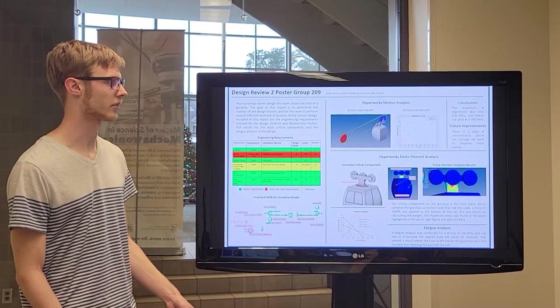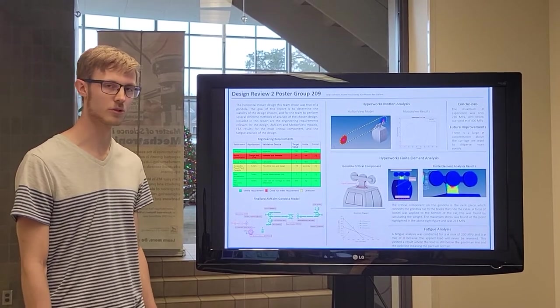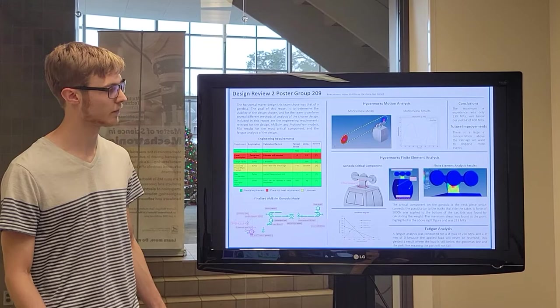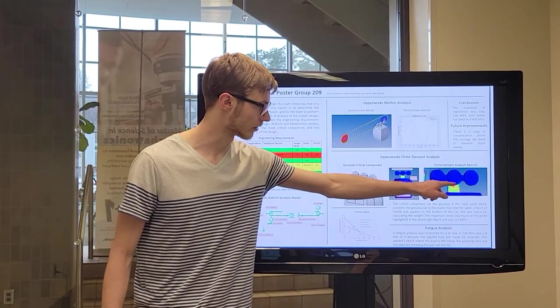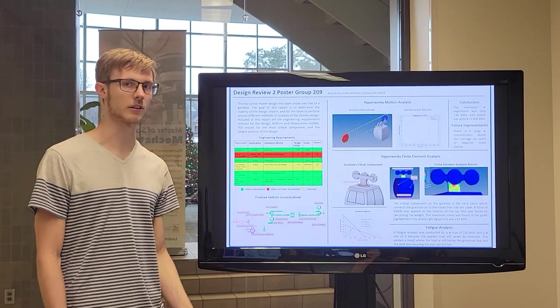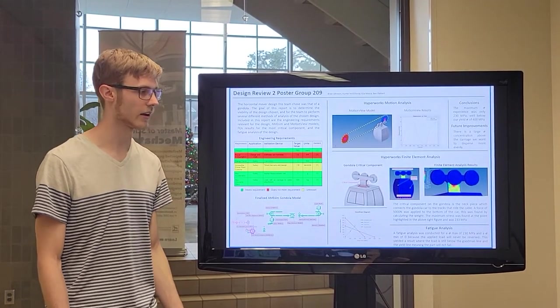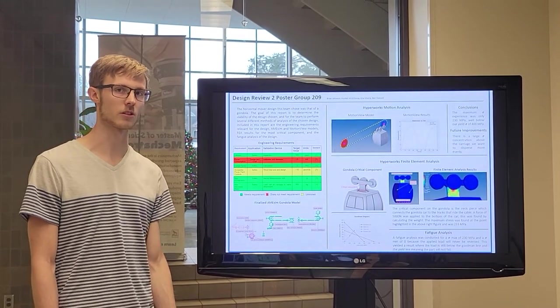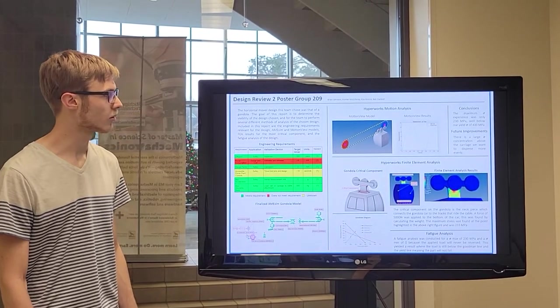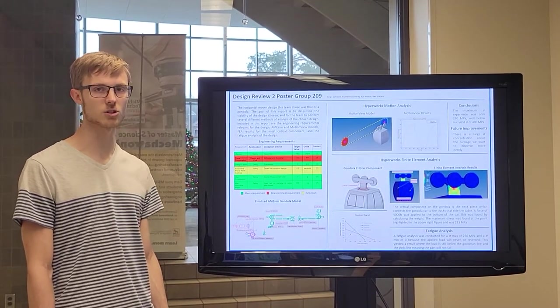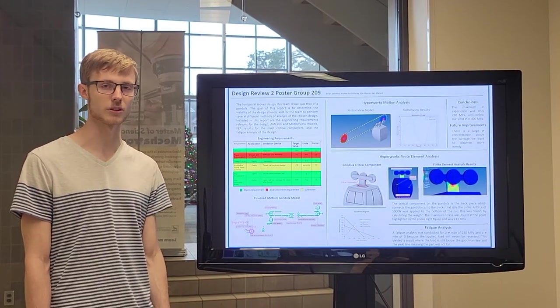For future improvements, we would like to reduce stress concentrations in the neck or critical component, where you can see a stress concentration where the neck meets the pulley. This can be done using larger radiuses and a geometry that more effectively distributes the load. We would also like to adjust our power consumption requirements because the initial goal we set for ourselves was unrealistic.